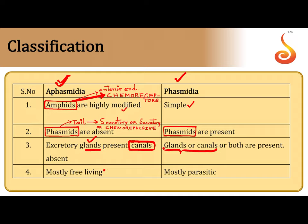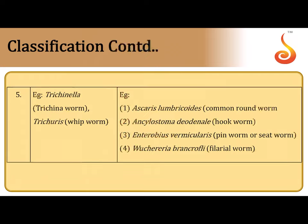Aphasmidians are mostly free-living, whereas Phasmidians are mostly parasitic. Examples of Aphasmidia include Trichinella spiralis, called the Trichina worm, and Trichuris, commonly called the Whipworm.